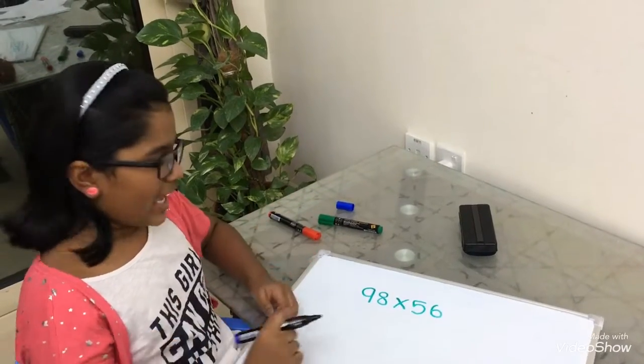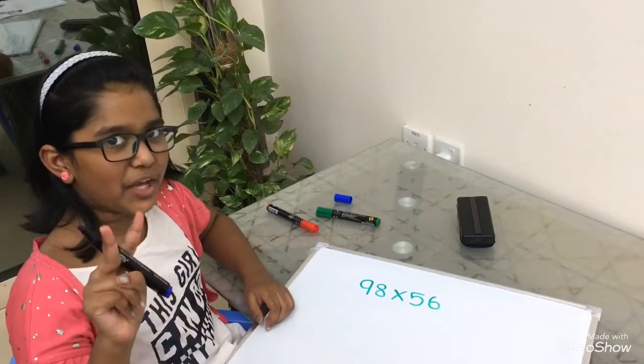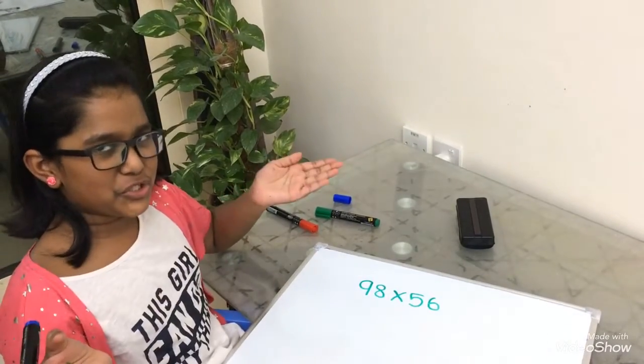In this video you will see if the first multiplication answer comes as two digit number, I will tell you what to do.